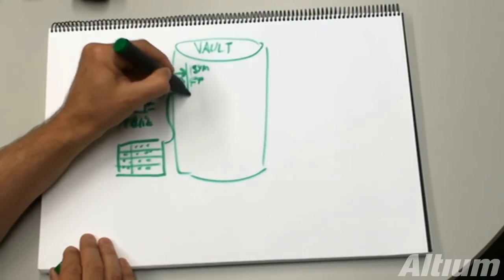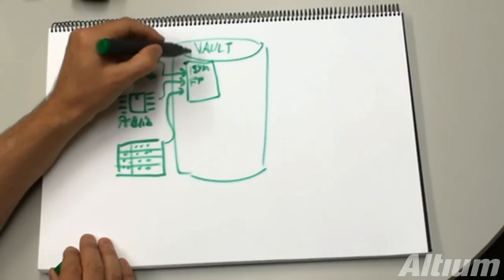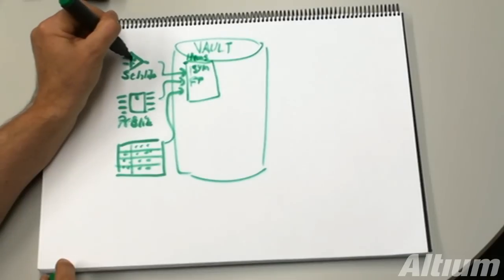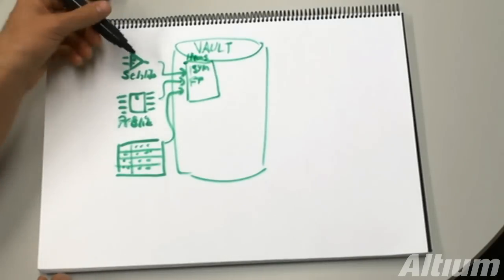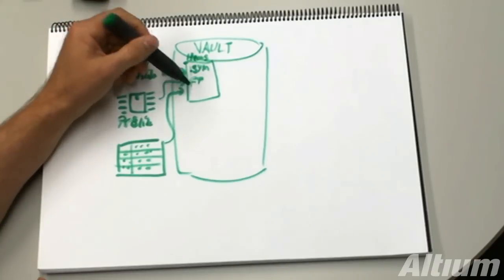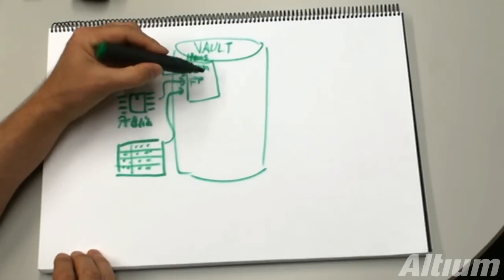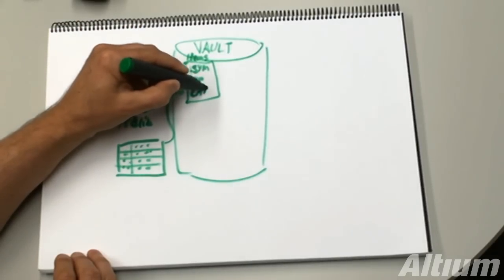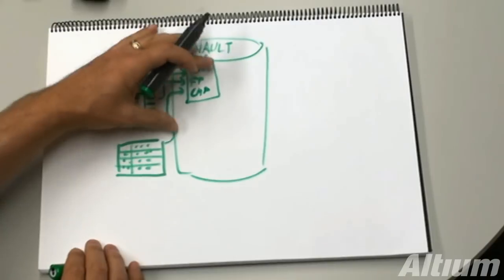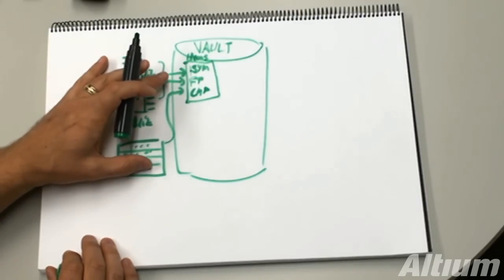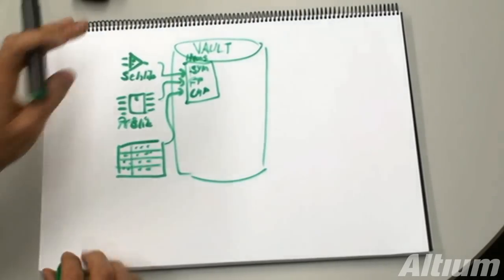And then, those are essentially items which have a revision. So as you change a schematic library component and update it, you'll re-release it into new revisions of its symbol item in the vault, and same with footprints. And then, those are combined logically with the parametric data to form components. And there's a whole other science in the vault of managing components and managing part choices and links to manufacturer and supplier data, and so on. But I'm not going to talk about that in this little video.